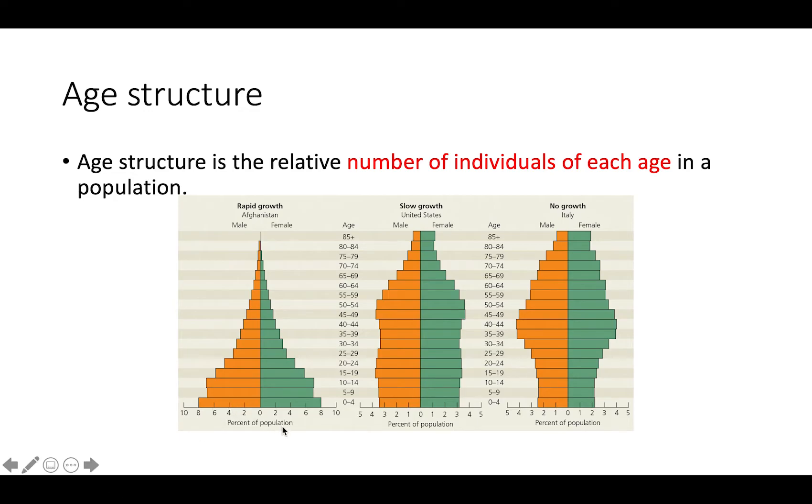In a growing population, it's going to look like a pyramid. You're going to have a large number of individuals in these younger age groups. The reason this population is going to be growing is because all the members that are currently in these age groups are going to move up and eventually become of reproductive age. They'll have their own children and it's just going to continually increase the rate of growth of that population.